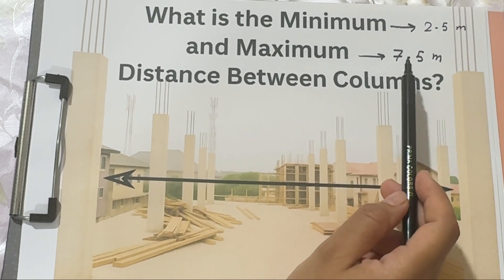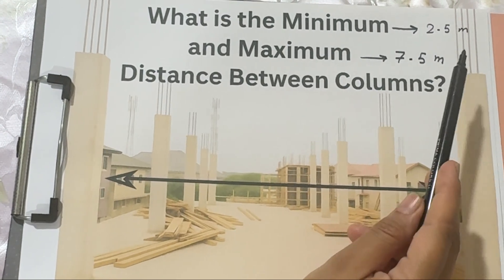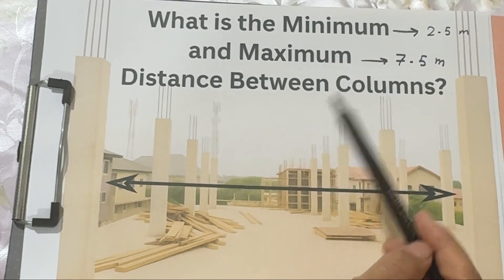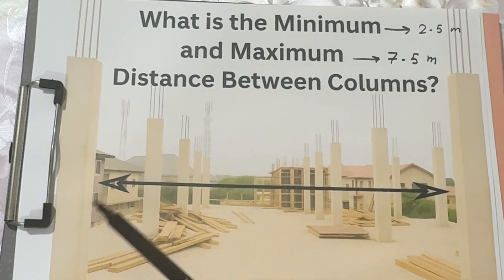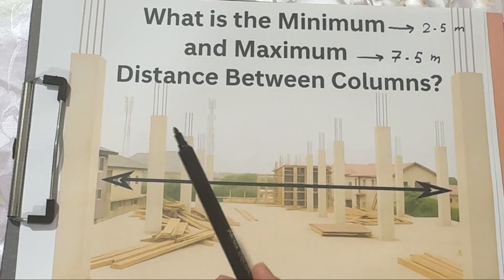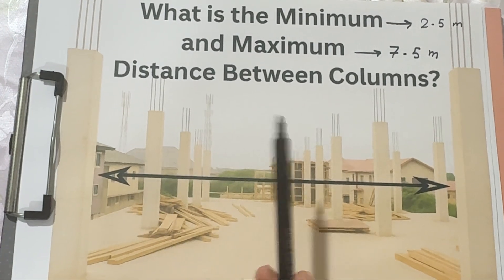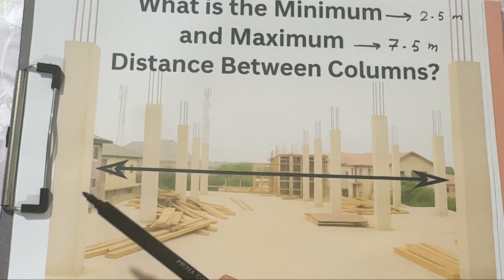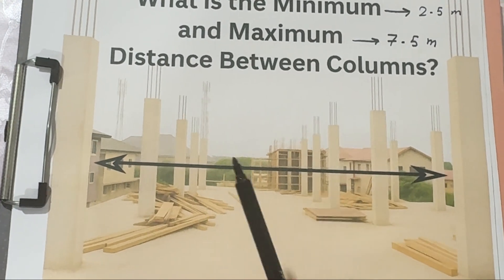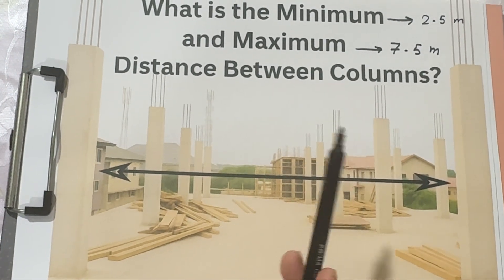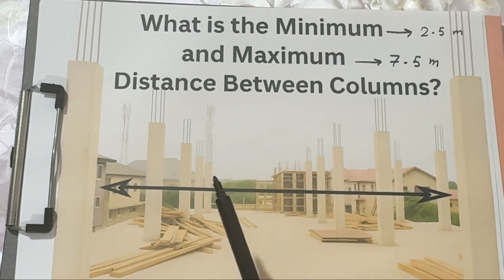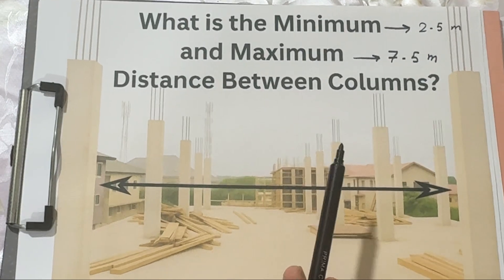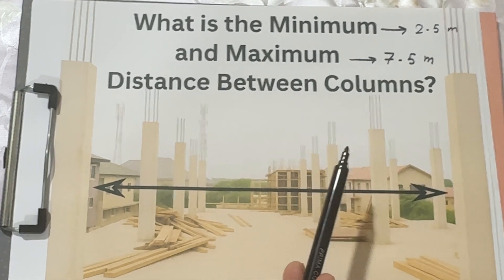To wrap it up: minimum column spacing is 2.5 meters or 8 feet; maximum column spacing is 7.5 meters or roughly 25 feet. It depends on loads, building function, materials, and design layout. The key takeaway is that column spacing is not fixed — it's all about balance and purpose. Whether it's a small house or a tall skyscraper, the goal is the same: keep the structure safe, strong, and efficient.